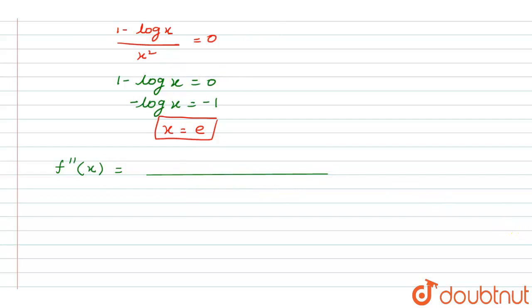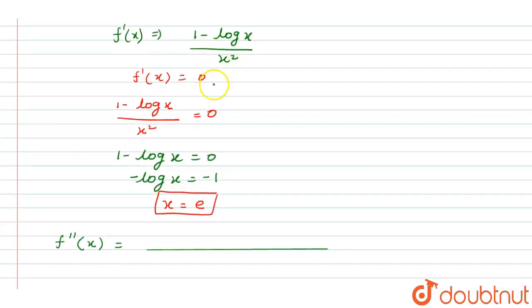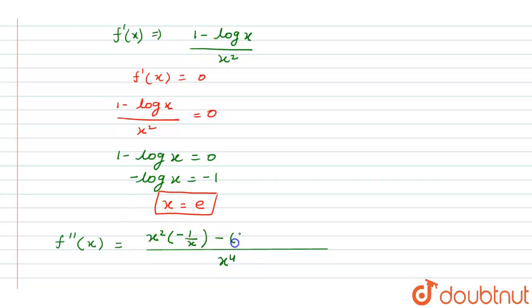We have f'(x) = (1 − log x) / x². Applying the quotient rule, we get x⁴ in the denominator: x² times the differentiation of (1 − log x), which is −1/x, minus (1 − log x) times the differentiation of x², which is 2x.